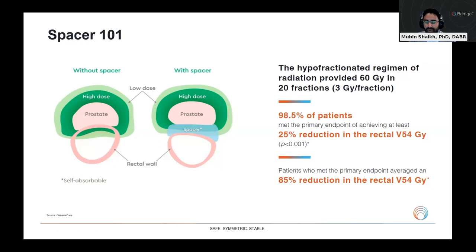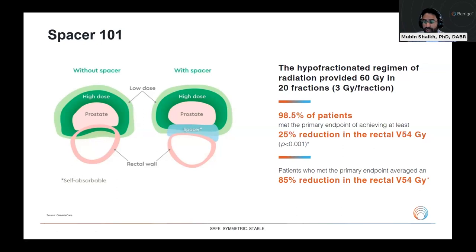Here's an interesting fact. If you look at the hypofractionated protocol done on Beragel patients — they gave 60 Gy in 20 fractions, so 3 Gy per fraction — the endpoint was a 25% reduction in the rectal V54 Gy, which is the 90% isodose line. What they found is that 98.5% of these patients had at least a 25% reduction in the rectal V54 Gy. In plain speak, a spacer helps pull the rectal wall outside the high-dose region. What's also quite interesting is that patients who met this primary endpoint had an almost 85% reduction in V54 — so very significant.